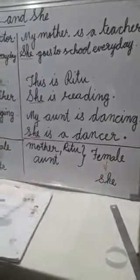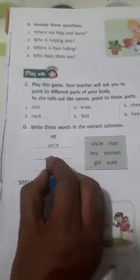Now we will do this exercise. In this box, words are given. The first one is 'uncle'. Uncle is a man — a male person — so it will go in the 'he' column. That is already done. Next is 'man'. Man is male, so we will write it in the 'he' column.